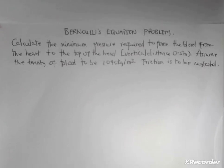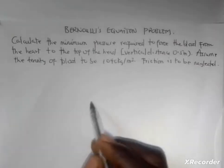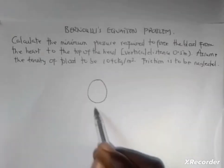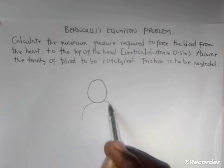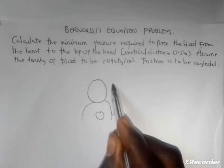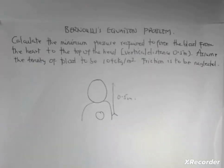This is an application of Bernoulli's equation in the health field - biomedical engineering. We have the body and we have to find the minimum pressure required to force blood from the heart to the top of the head. If we assume we have a small head here, then the heart will be around this side, so we have to force blood from here to this side, which is 0.5 meters.